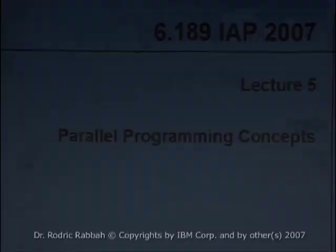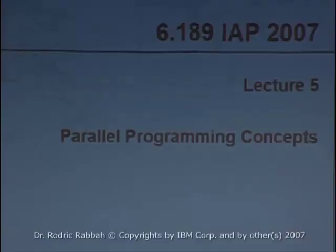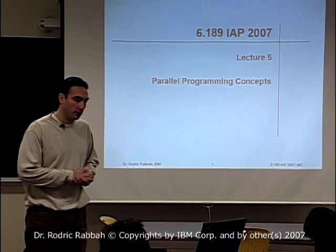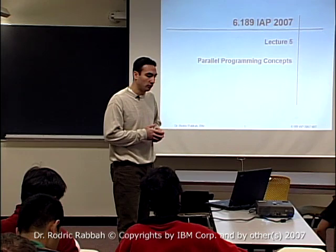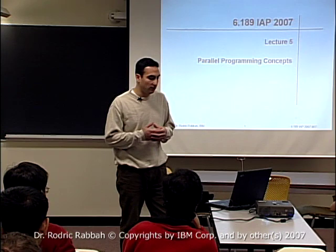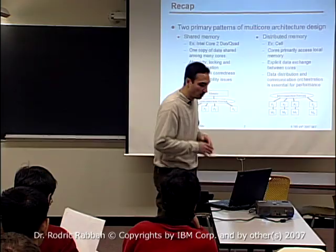So last few lectures, you heard about parallel architectures and started with lecture four on discussions of concurrency — how do you take applications or independent actors that want to operate on the same data and make them run safely together? Recapping the last two lectures, you saw really two primary classes of architectures, although Samant talked about a few more.